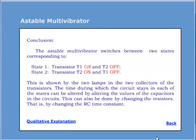An astable multivibrator switches between two states corresponding to State 1, that is transistor T1 on and T2 off, and State 2, that is transistor T2 on and T1 off.